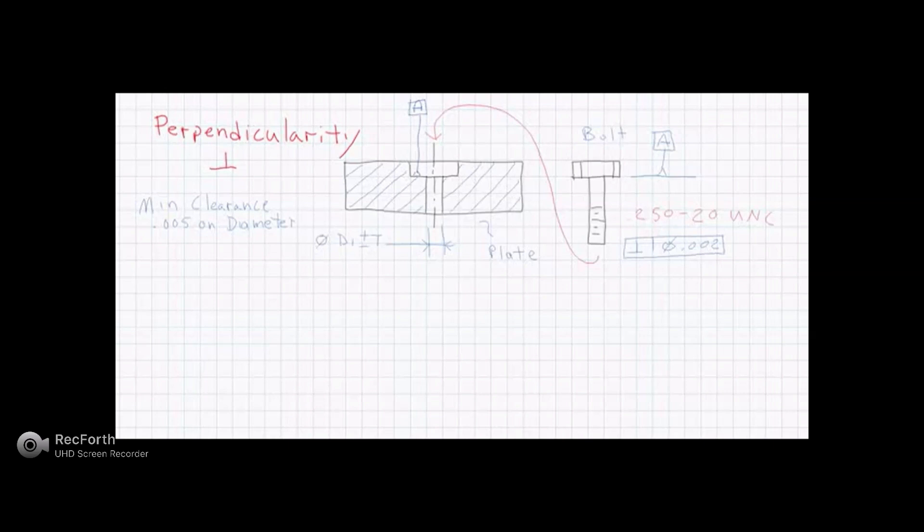Just as a reminder, in the ASME Y14.5 2009 standard, it is now recognized that angularity is equal to perpendicularity, and they can be used interchangeably when we have a perpendicularity example or squareness.